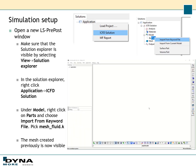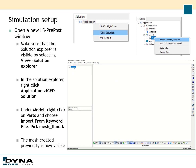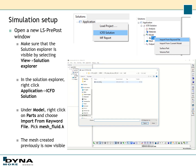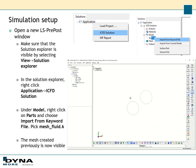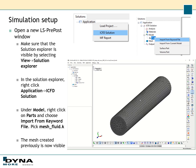Now it is time for the simulation setup. Open a new LS-PrePost window and make sure the Solution Explorer is visible — if not, activate it under View and Solution Explorer. In the Solution Explorer, right-click on Application and choose ICFD solution. Then under Model, right-click on Parts and choose Import from Keyword File. A window will appear where you can pick the mesh_fluid file created previously. Open it, and the mesh should now be visible in the LS-PrePost window.